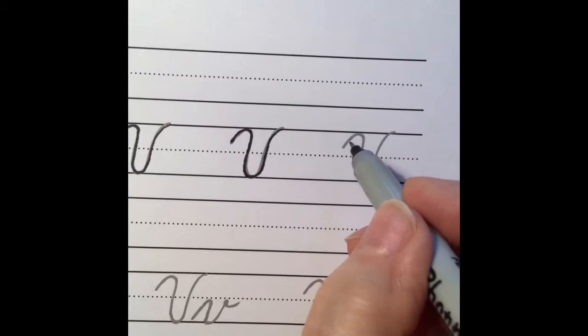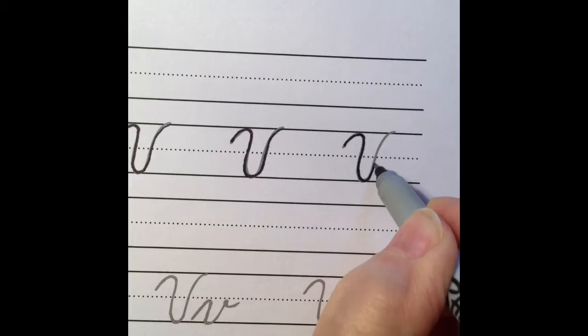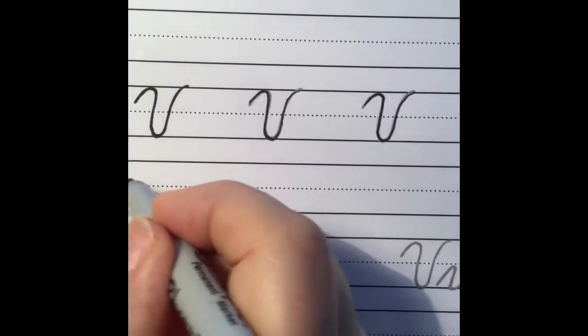You want the lines on the sides to be kind of straight, under curve, except clear at the top it starts having a little curve of its own.